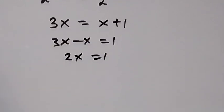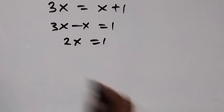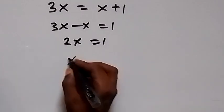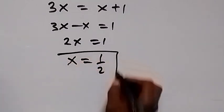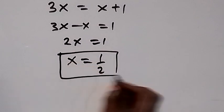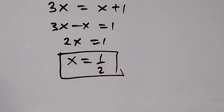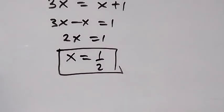Taking x to the left side: 3x minus x equals 1, so 2x equals 1. Dividing both sides by 2, x equals 1 over 2. Thank you for watching — please share this video, subscribe to my channel, and give it a thumbs up. See you next class!